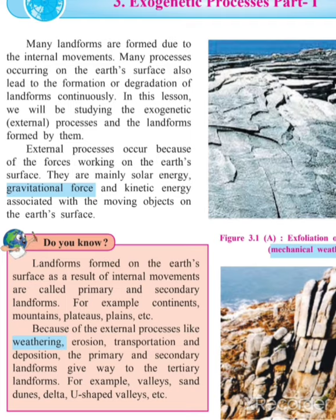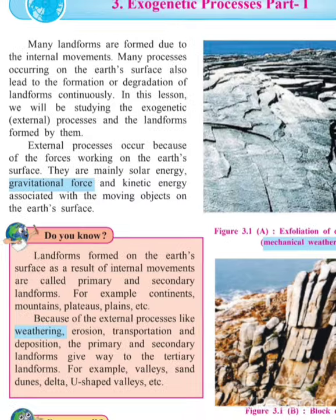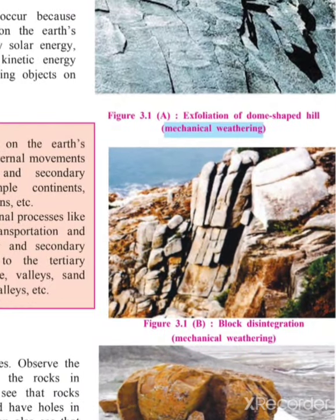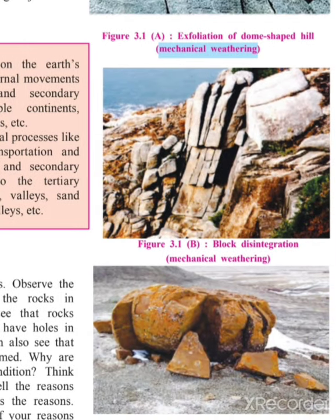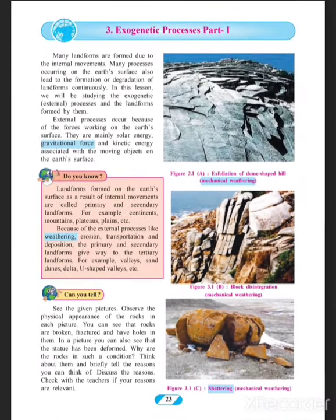External process occurs because of the forces working on the earth's surface. There are mainly solar energy, gravitational force, and kinetic energy — all three energies with moving objects make the forces working on the earth. The external forces are related to internal changes. In figure 3.1a, they have given the example of exfoliation of a dome-shaped hill. In 3.1b, the example of block disintegration, and in 3.1c, the example of shattering — that is mechanical weathering.